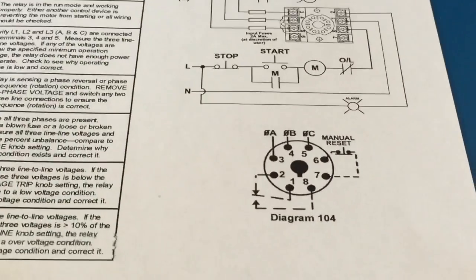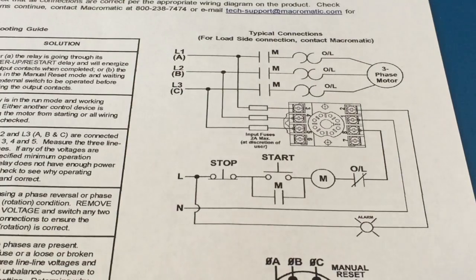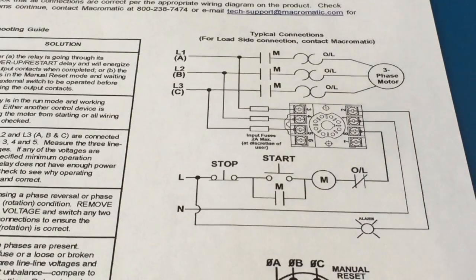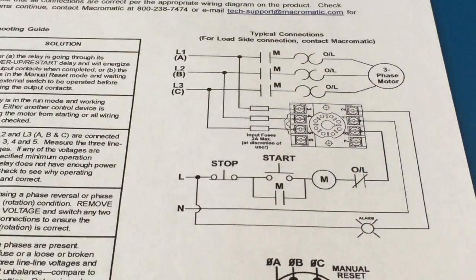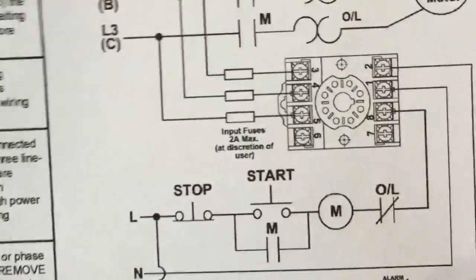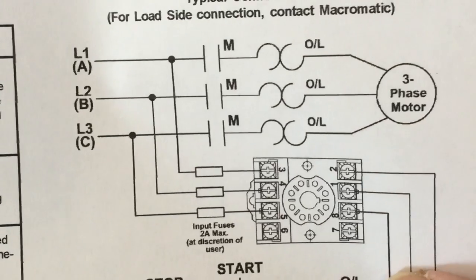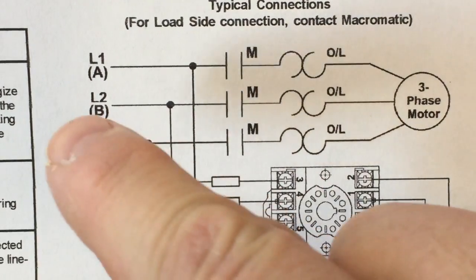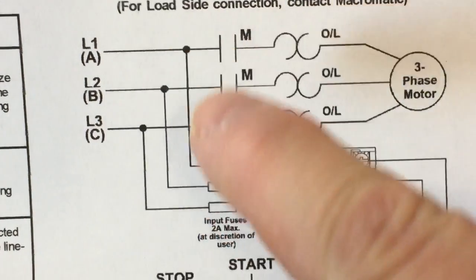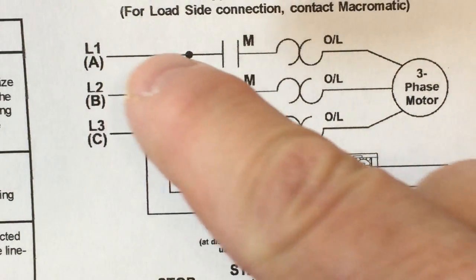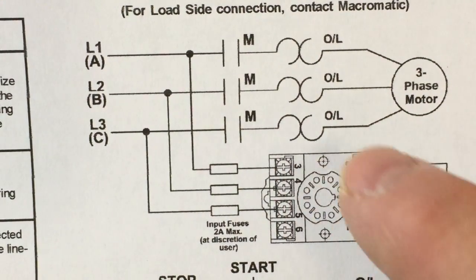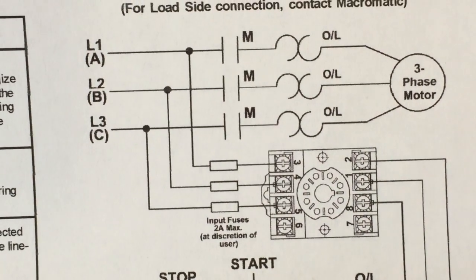I'm going to show you this on more of a ladder diagram or a wiring diagram that actually comes with this unit and this is pretty handy in seeing what's going on with this. Okay, so let's look at this wiring diagram here. So this is L1, L2, L3. This would be on the line side of your starter. And you can see how L1, which is A phase, goes to pin 3. This is the eight pin base that that relay sits on.